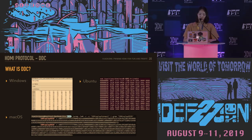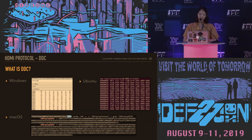On Windows, EDID is stored in the registry. On Ubuntu, it can be found in the path under DRM. And on Mac OS, you can check it through the IO Registry.